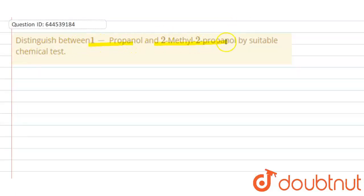So 1-propanol, the structure of 1-propanol is like this: CH3-CH2-CH2-OH. This is your 1-propanol.